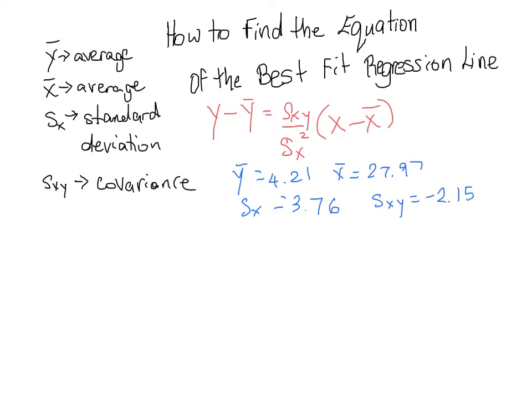You'll notice that we don't have a specific value for x or y. That's because there is a list of x values and y values. Ultimately, when we finish, it's going to be in the form y equals mx plus b — we'll have y and x remaining in the equation, so we're not plugging in those.